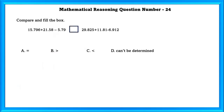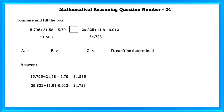Question No. 24: Compare and fill the box. Manipulating the first section, we get 31.586. Manipulating the second section, we get 34.723. The second part is greater than the first part, so the answer is C.